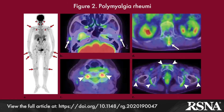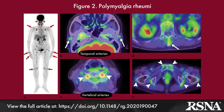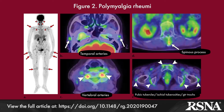In the overlapping entities of giant cell arteritis and polymyalgia rheumatica, usually seen in older adults, FDG PET shows similar findings to those of rheumatoid arthritis, although uptake in the ischial tuberosity, greater trochanter, and/or lumbar spinous process, indicating bursitis, is characteristic of polymyalgia rheumatica.